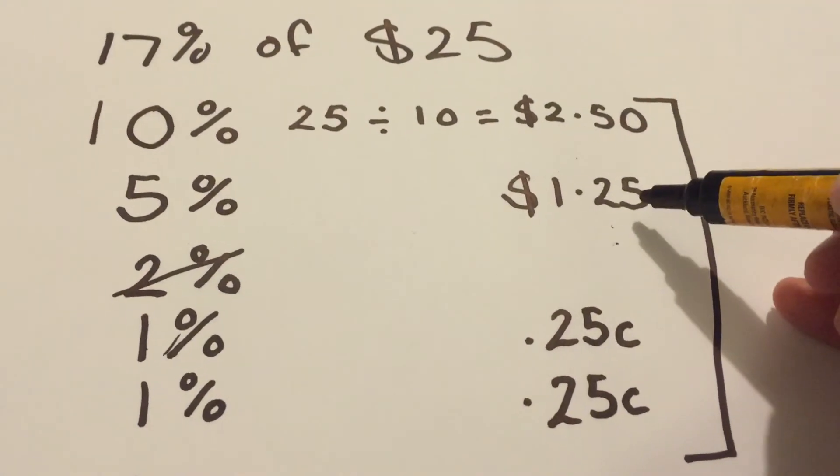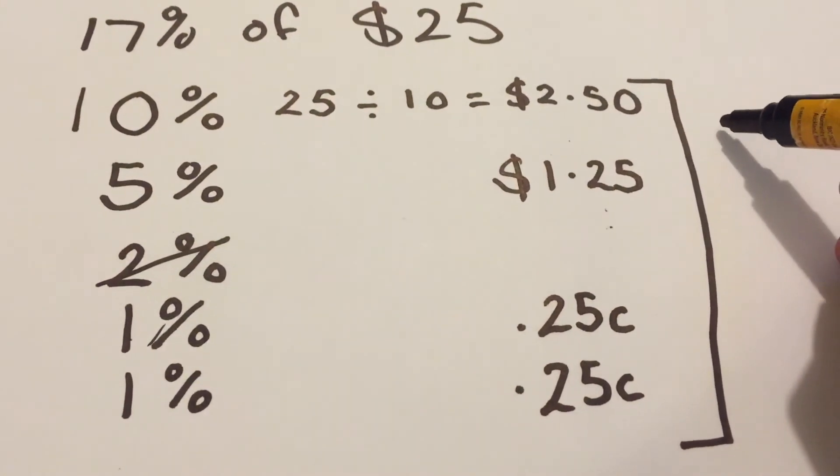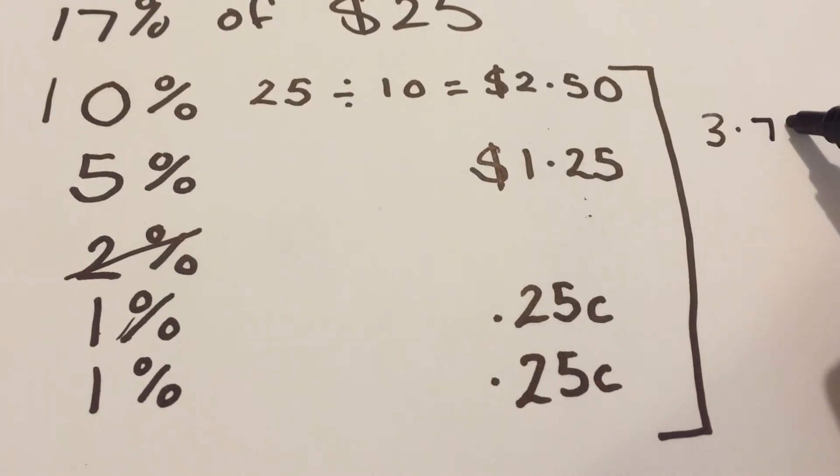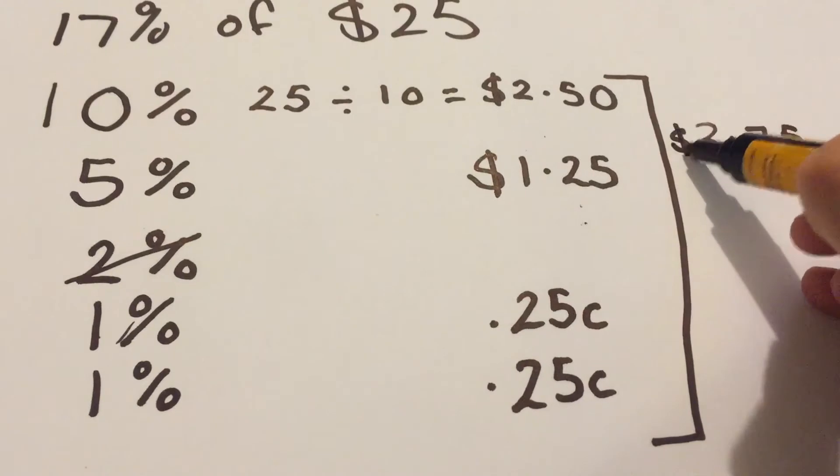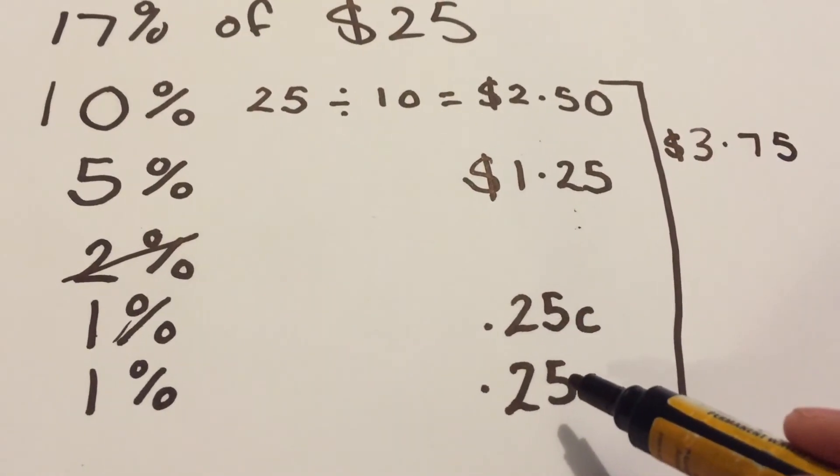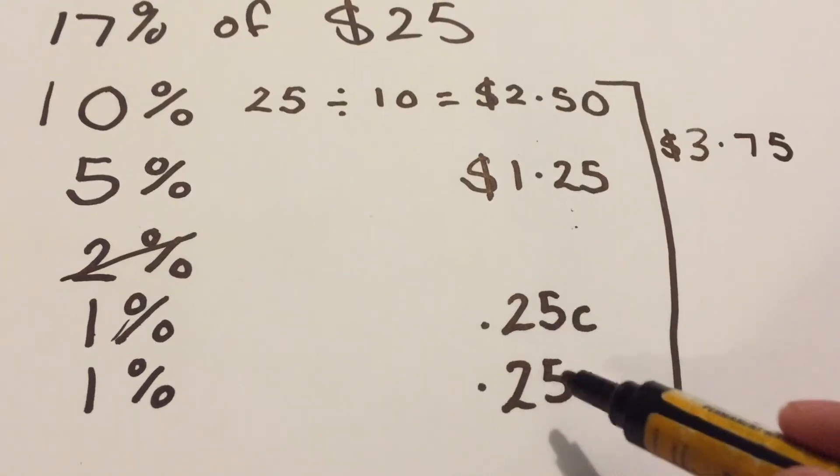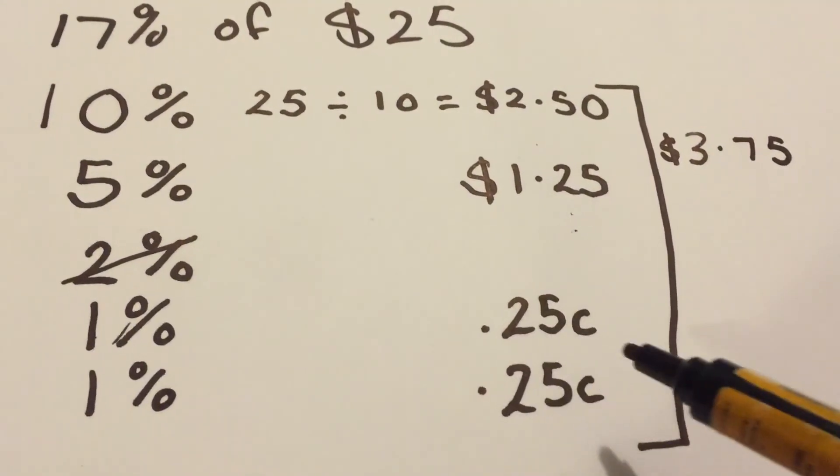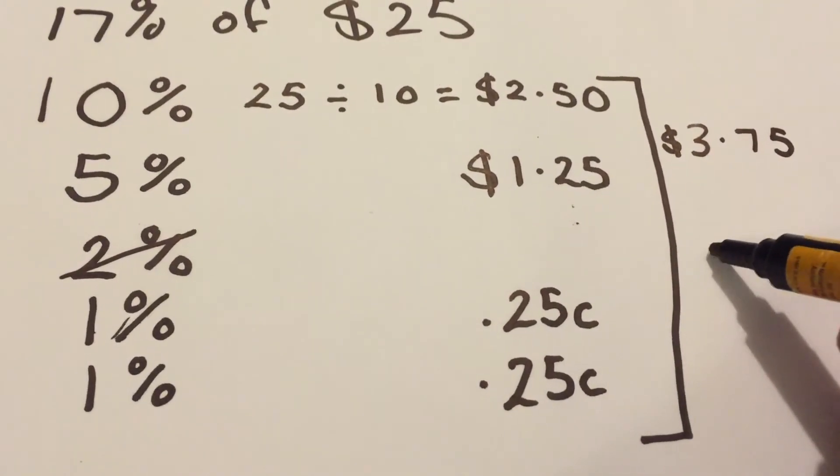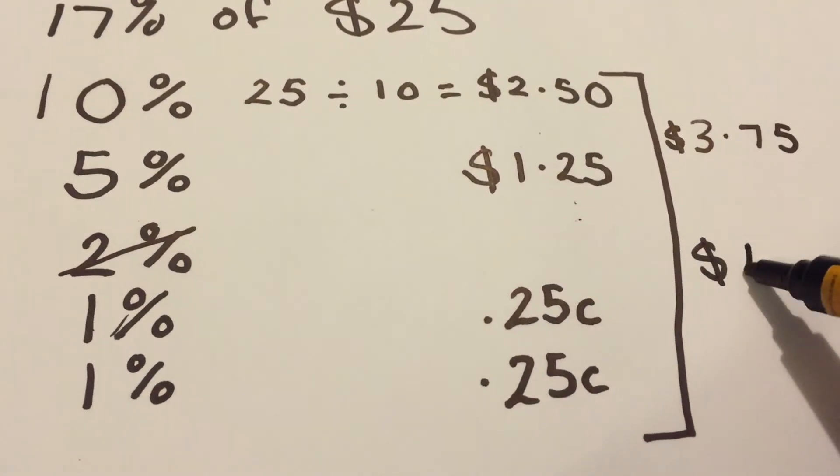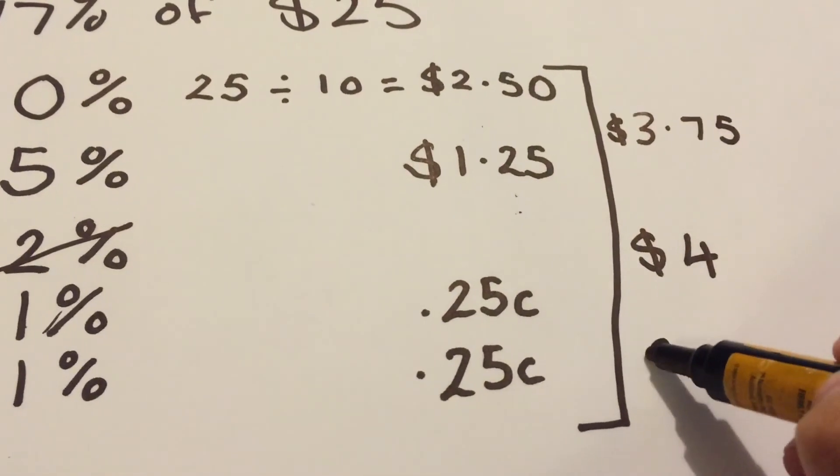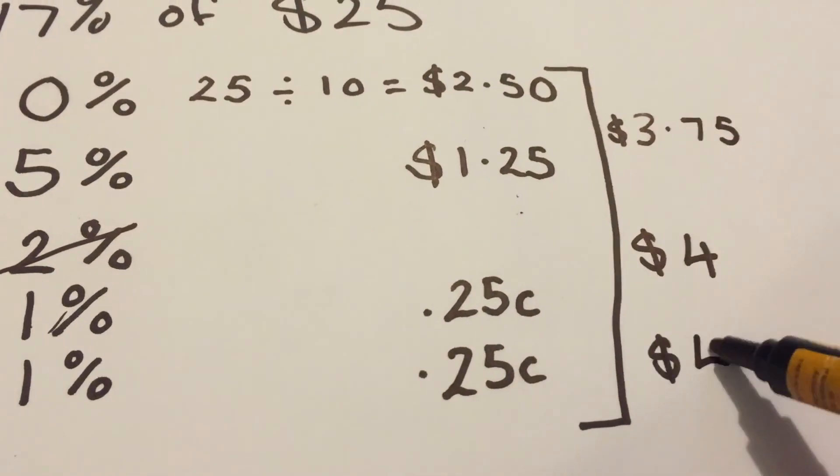$2.50 and $1.25. That's going to make $3.75. And then you've still got your 25 cents and your 25 cents to add on. Add those together, makes 50 cents. In this case, it's probably easier just to add your 25 cents on. So $3.75 and 25 is $4.00. And another 25 cents is $4.25.